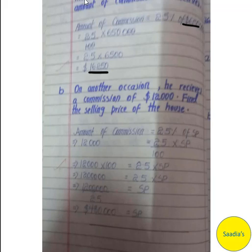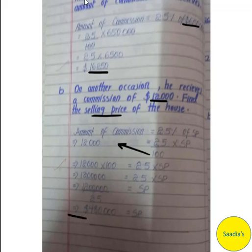In part B, on another occasion the agent receives a commission of $12,000. Find the selling price of the house. Amount of commission equals 2.5% of selling price, so 12,000 equals 2.5 over 100 multiplied by the selling price. Moving 100 to multiply the other side and 2.5 to divide, we can solve for the selling price of the house.